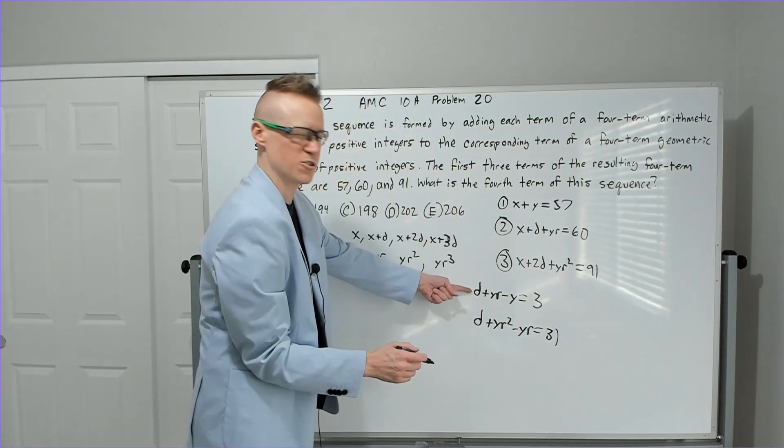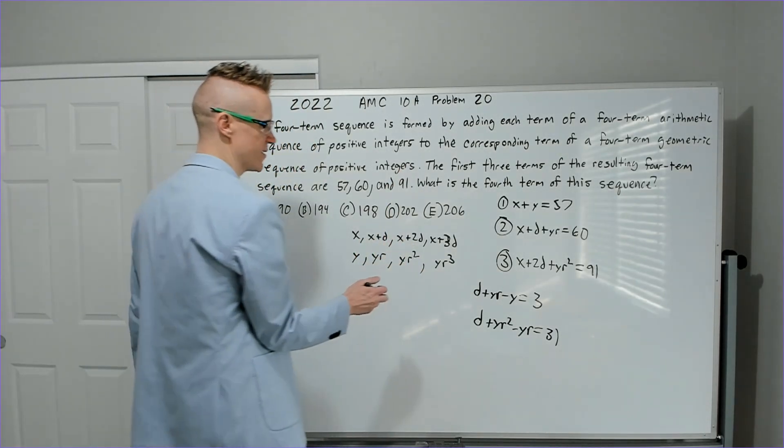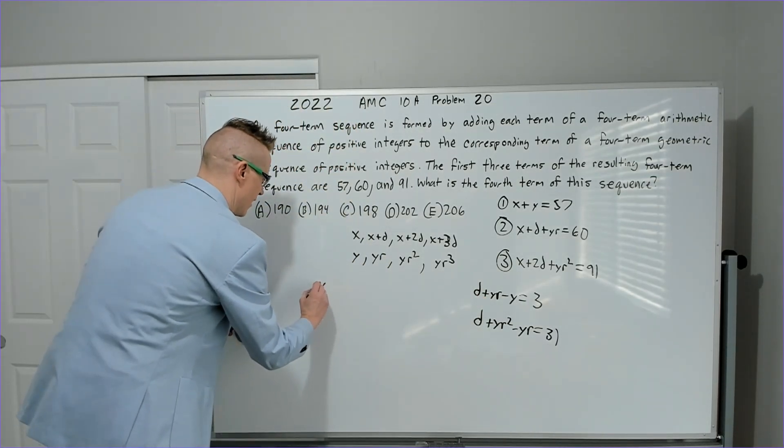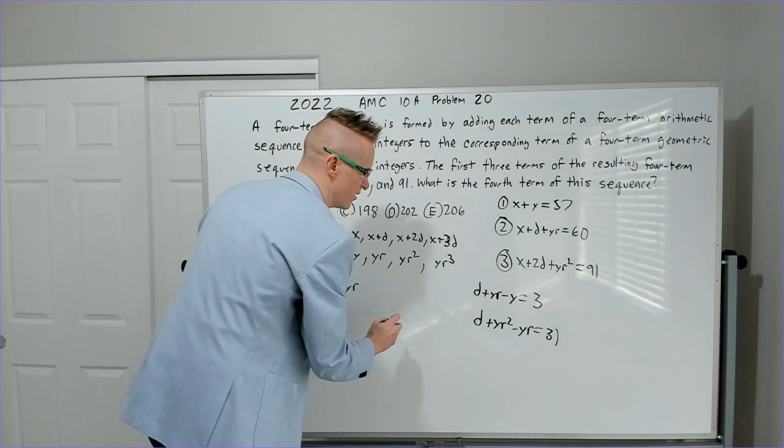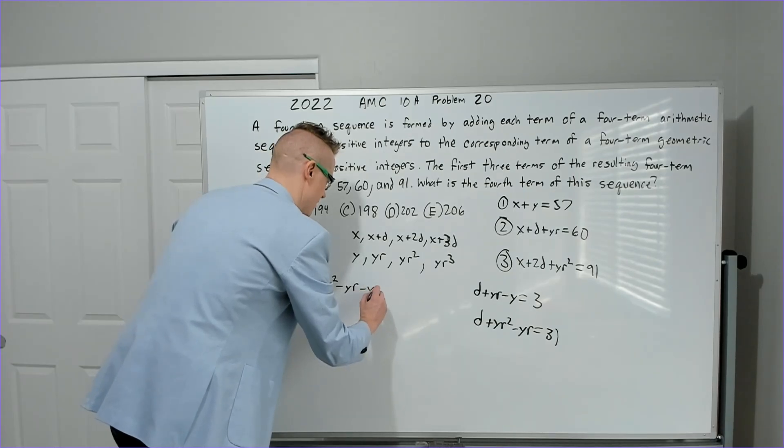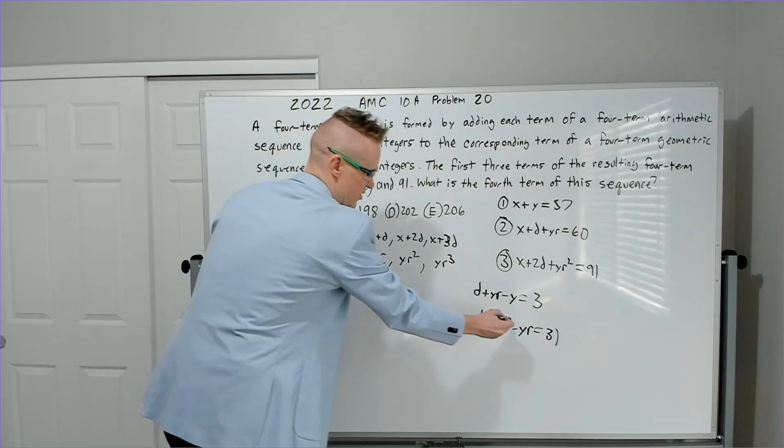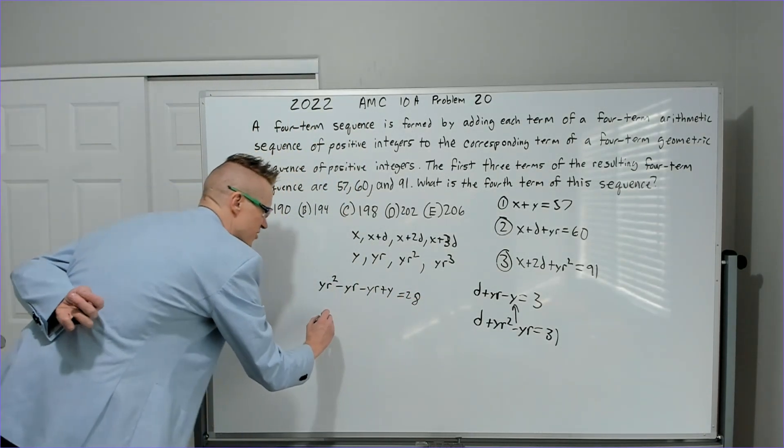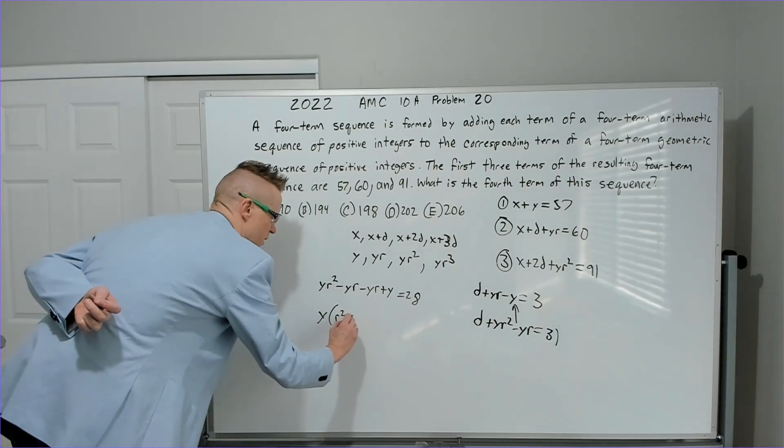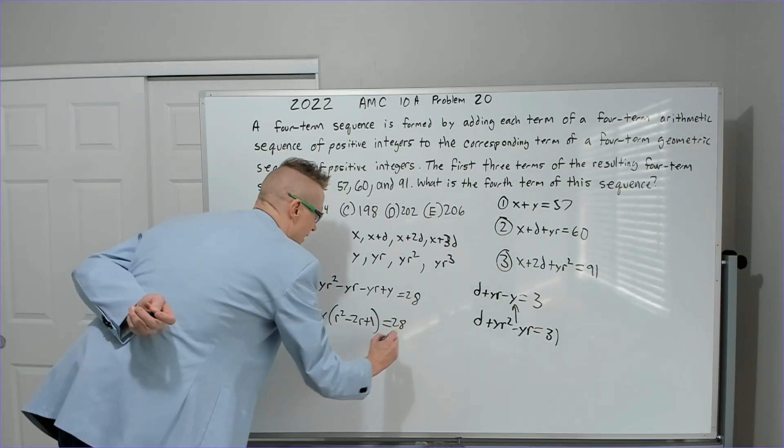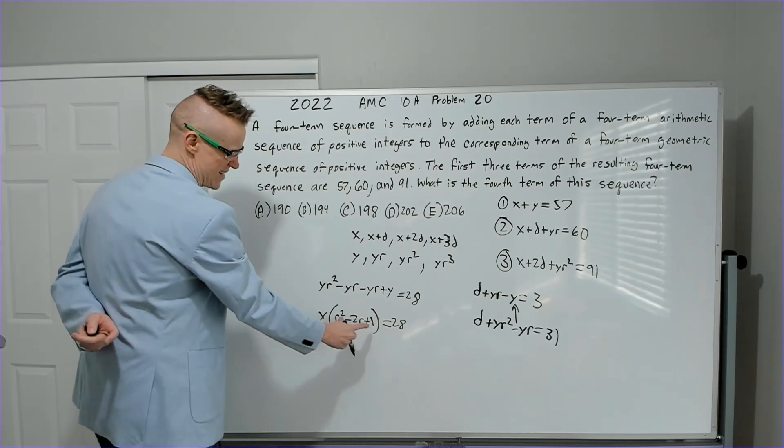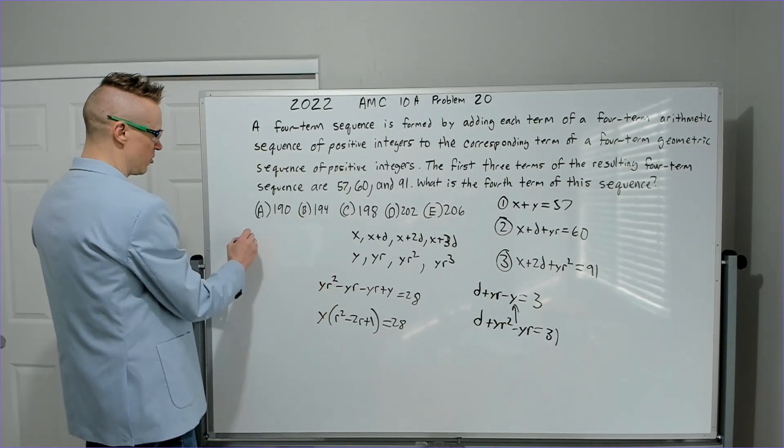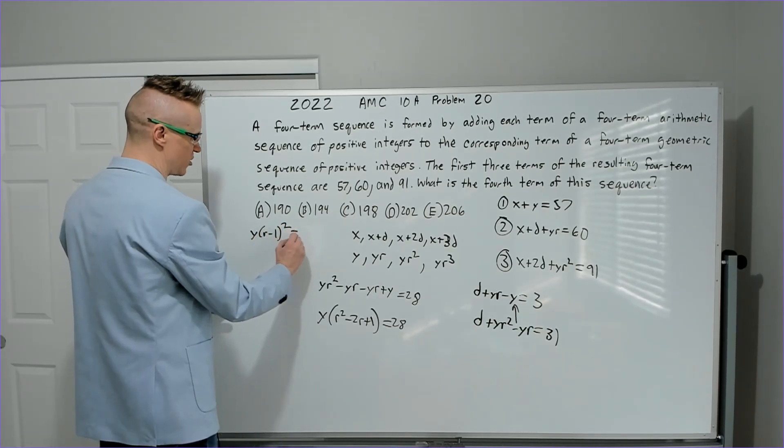Now I'm going to take this and subtract this. I think I want to take this one minus that one because it'll make the Ds cancel and YR squared minus YR. So now we have YR squared minus YR, and I've got negative YR minus Y. No, minus a negative Y because you're subtracting a negative, so it's actually plus Y. And then this will equal 28. Now I can factor a Y out of that, and if I do, I will get R squared minus 2R plus 1. And immediately you see that, and this is kind of a breadcrumb.